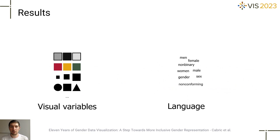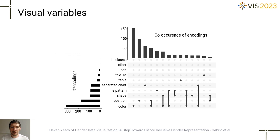We analyzed the more than 600 coded images for both visual elements and text. The results of the scientific and public-facing visualizations are quite similar in terms of both visual variables and language used. For the sake of conciseness, we present only the results from scientific visualizations. Our analysis shows that scientists tend to use only one visual channel to distinguish gender. By far, color is the preferred visual channel, followed closely by position.